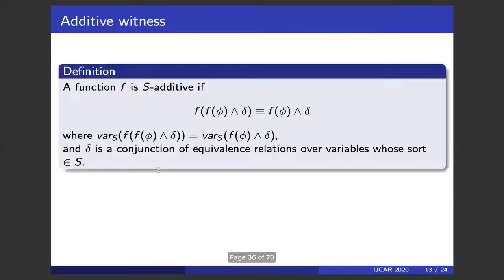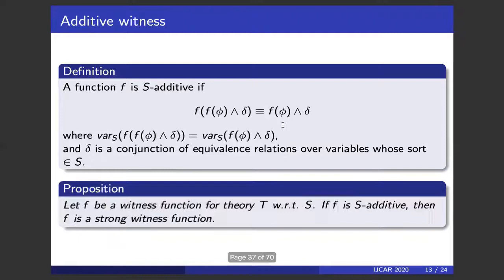Now for contributions. We introduced the concept of additive witness. A function F is S-additive if applying F a second time outputs a formula equivalent to the input, where δ is a conjunction of equivalence relations over variables whose sorts are shared sorts. We prove: if F is a witness function for theory T with respect to S, and F is S-additive, then F is a strong witness function. This lets us use additivity to remove the 'strong' requirement from the witness function.